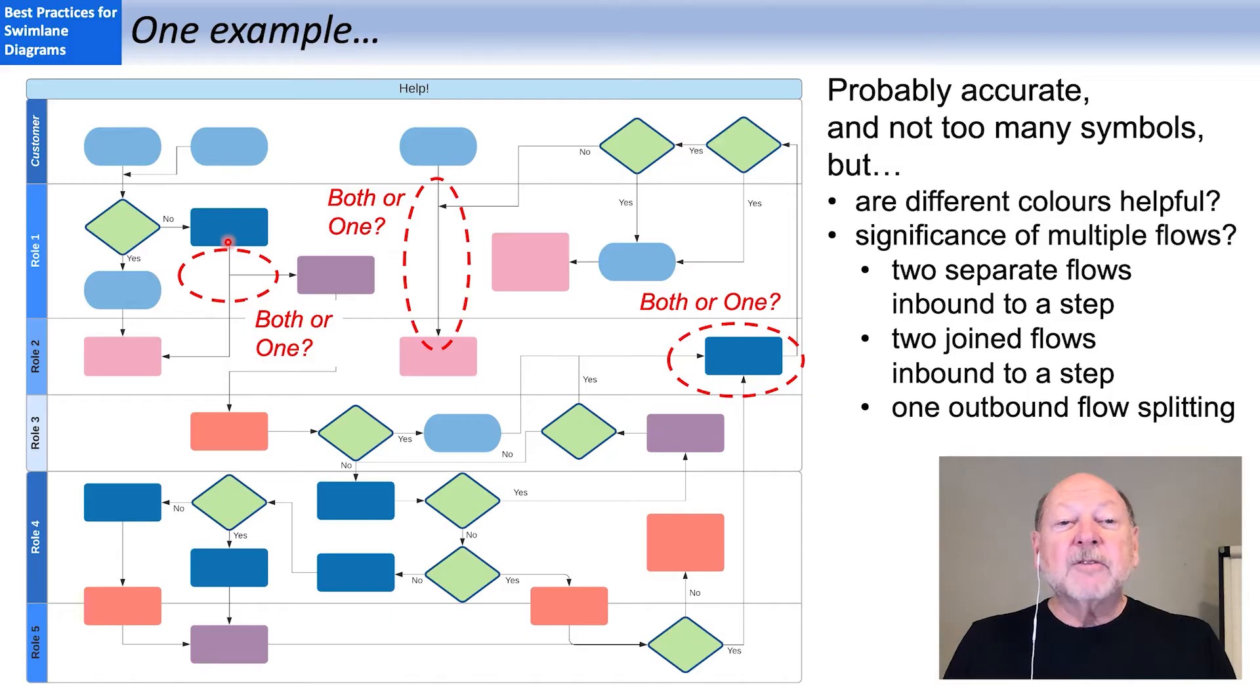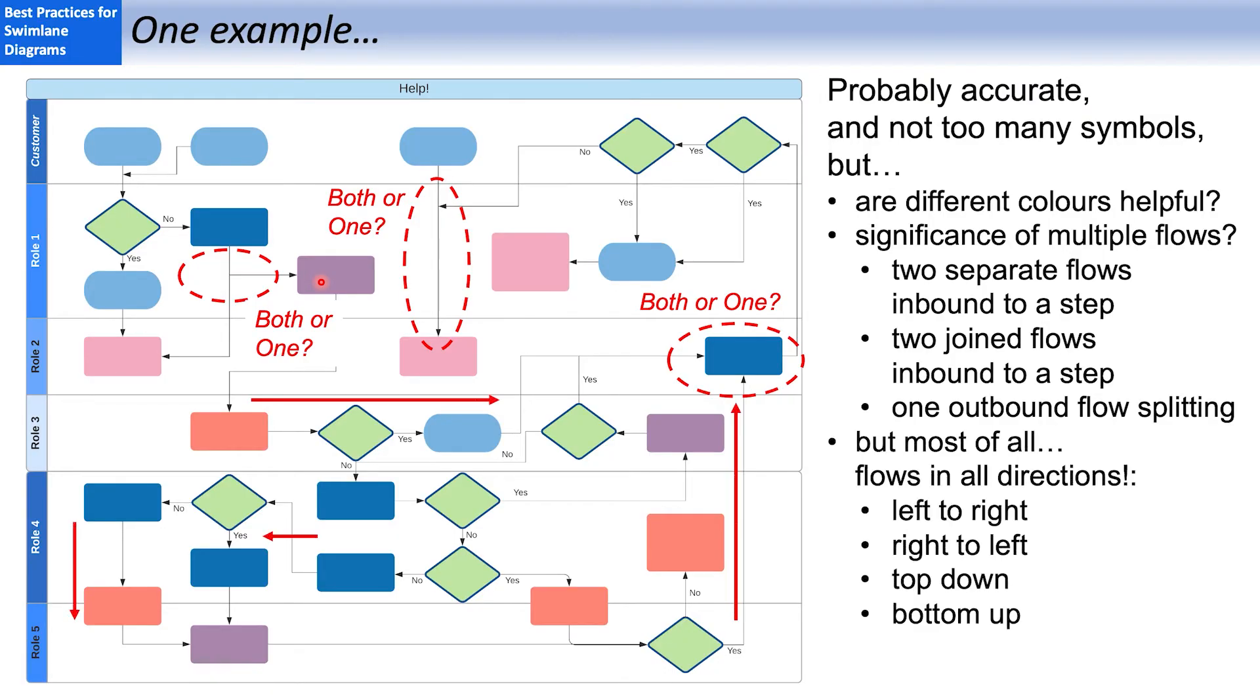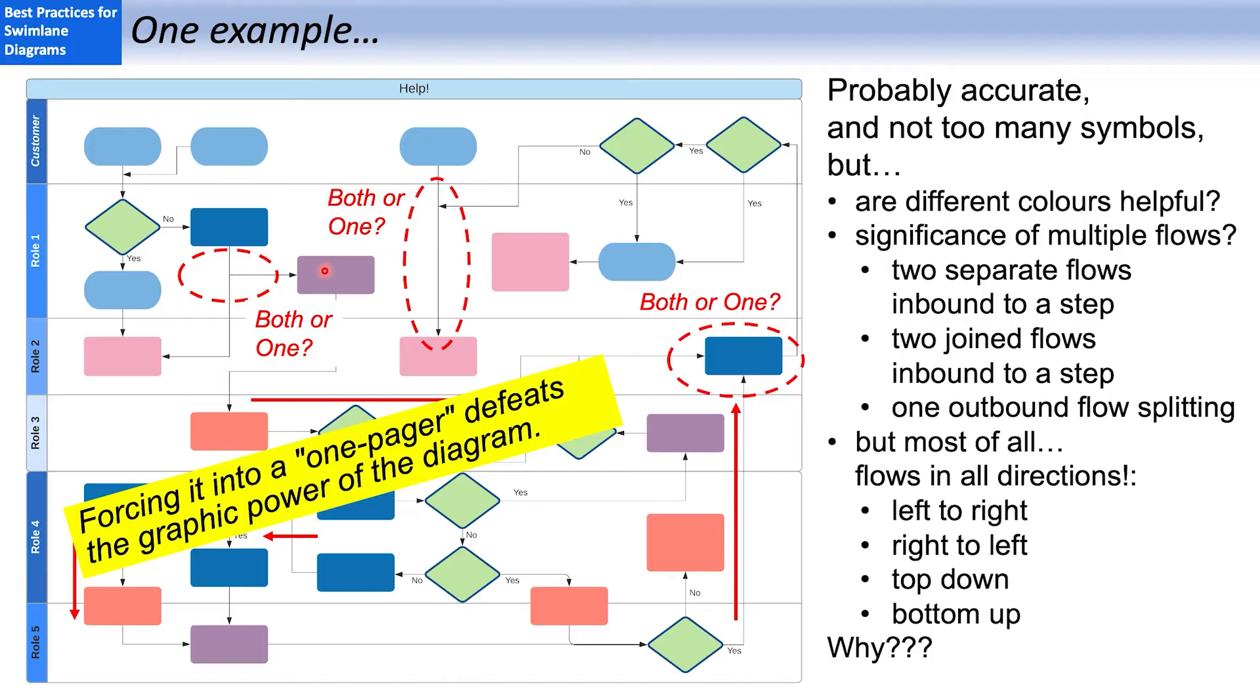And over here, I have a flow line that splits and goes in two directions. Do we follow both of them or just one of them? Of even more concern is the lack of an overall direction. The flows on this diagram go in every direction. And why is that? Because the lure of the one pager is so powerful.